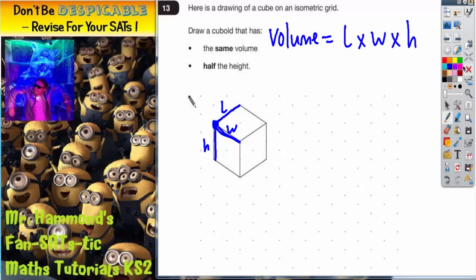What are these measurements for this cuboid? Well, this is 2, this is 2, and this is 2. So the volume of this cuboid is 2 × 2 × 2. Two times two is four, times two again is eight. So the volume is 8.